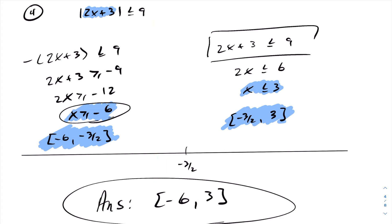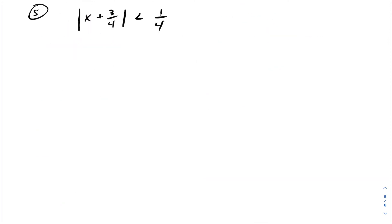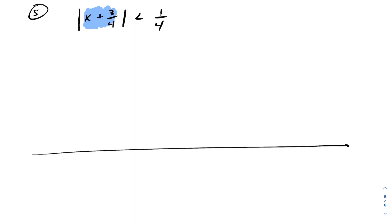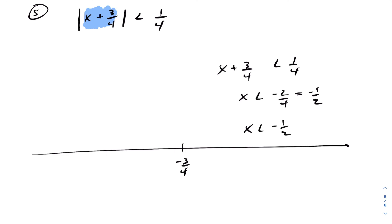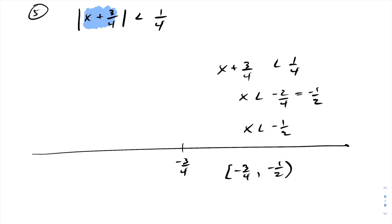Let's take a look at another example of solving absolute value inequalities. Same idea: we want to discover when the absolute value is going to be 0. In this case, if I let x be negative 3 quarters, we will be taking the absolute value of 0. Picking anything to the right, the input value will be positive, so I can drop the absolute value symbol and solve the inequality. Subtracting off 3 quarters, we get x is less than minus 1 half. Negative 1 half is greater than negative 3 quarters, so within this interval the answer goes from negative 3 quarters square bracket until minus 1 half, with an open bracket because we do not have strict equality.